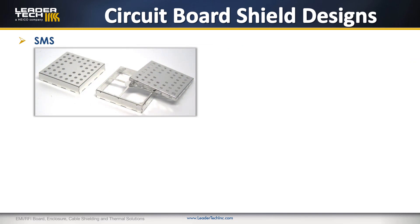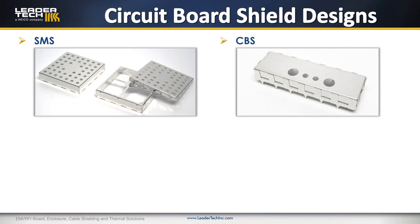These are a couple of different products that we make. This is an SMS shield — these are standard off-the-shelf tooled-up products that come in a full catalog of sizes. So if you can design your circuit board to use a part like this, they're already made, they're on the shelf, and they're the easiest type of product to use. This is a CBS shield — you can see the fence around the bottom section looks like little fingers. Those are straight pieces of fence that we can form to different lengths and widths, with different options for heights. It's a modular design, so if you don't have something that fits the ready-made off-the-shelf parts, we can design a shield like this.